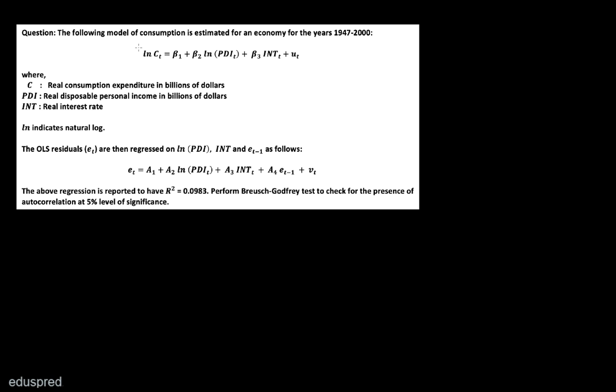In this video, I'm going to solve this question. The following model of consumption is estimated for an economy for the years 1947 to 2000. This is the regression model that's given to us, and this is how the variables are defined. ln indicates natural log. The OLS residuals are then regressed on three variables, giving us an auxiliary equation with an R² of 0.0983. We need to perform the Breusch-Godfrey test to check for the presence of autocorrelation at 5% level of significance.